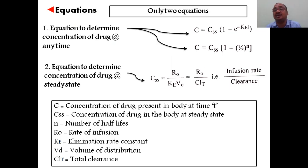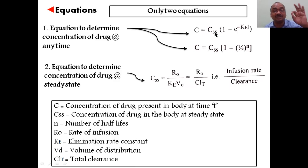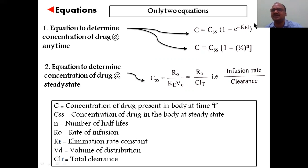Now we come to the equation — this is a very important equation to determine drug concentration in the body at any time during infusion. The equation is: C = Css × (1 − e^(−ke·t)), where C is the concentration of drug in the body, Css is the steady-state concentration, ke is the elimination rate constant, and t is the time at which you want the concentration. If you want concentration after six hours, t = 6; after one hour, t = 1. You only need ke and Css to use this equation.